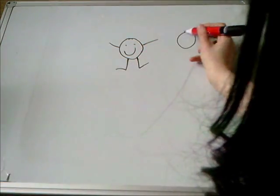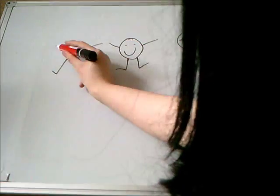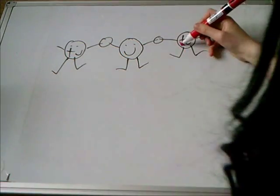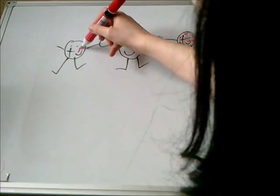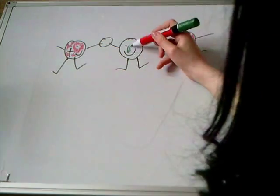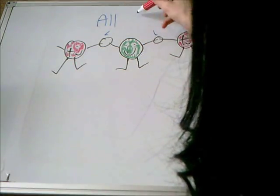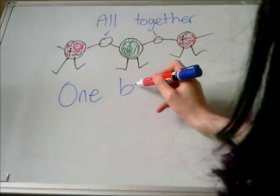Neutrons bind the protons together. The more protons there are, the more neutrons are needed to keep the protons together, as shown here. They're all together like one big happy family.